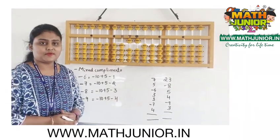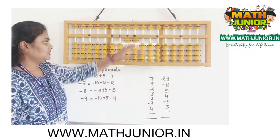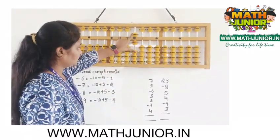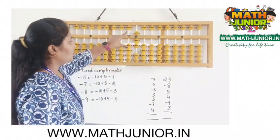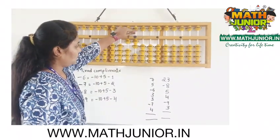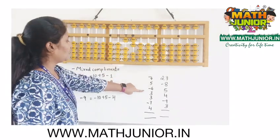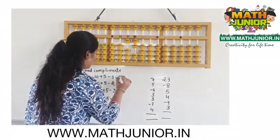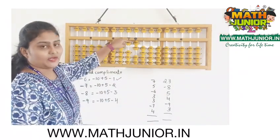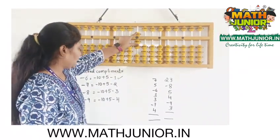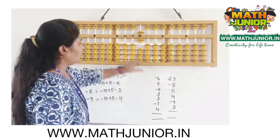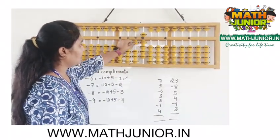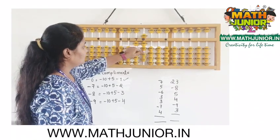Let's take some examples and solve them. The first example is: add 7, add 5, add 6, add 7. Add 5 is add 10 and minus 5. Then minus 6 — we cannot remove 6 directly, so we use the formula: minus 6 equals minus 10 plus 5 and minus 1. Then add 3 — we can add 3 directly.